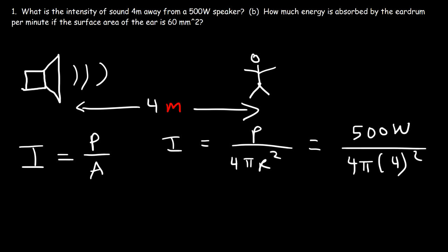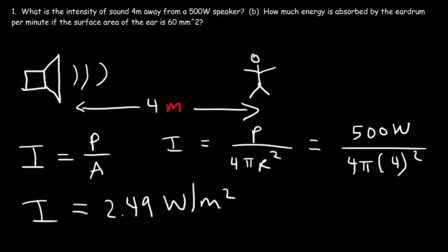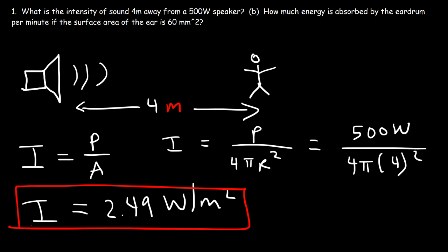The power is 500 watts and we divide it by 4π times 4 squared square meters. So it's 500 divided by 4π times 16, and that gives an intensity of 2.49 watts per square meter. That's the answer for part a.